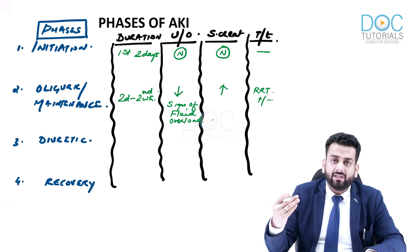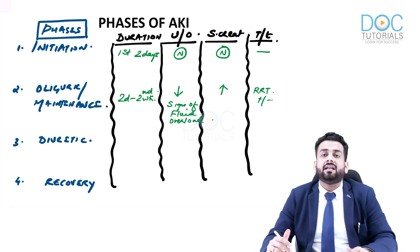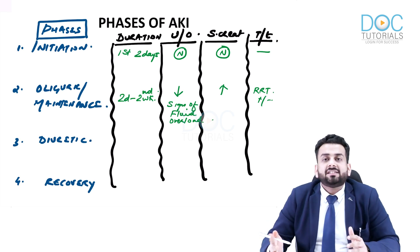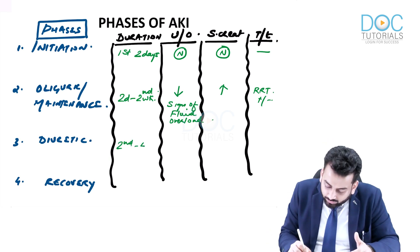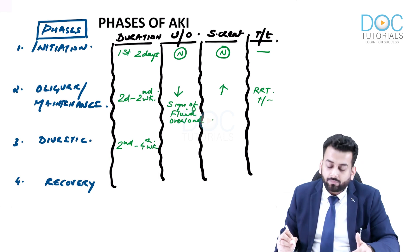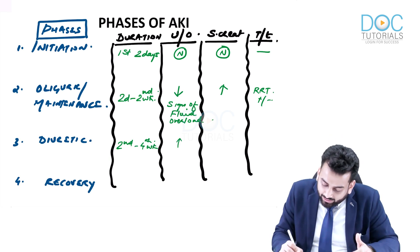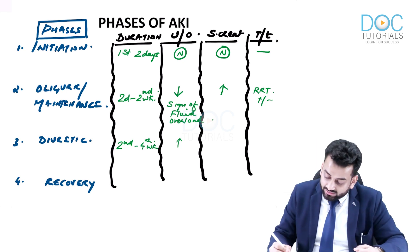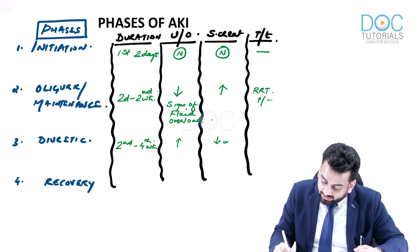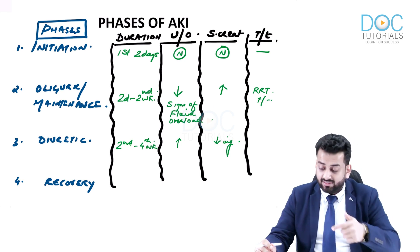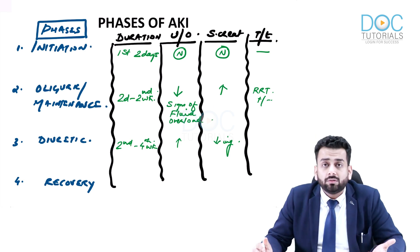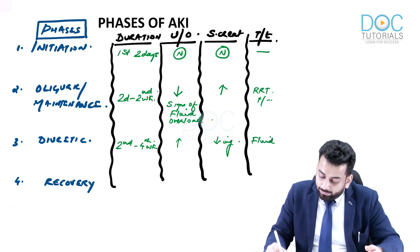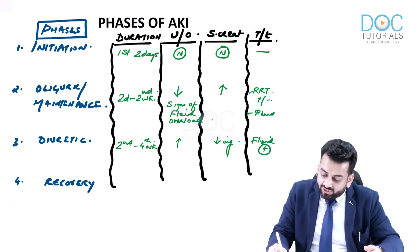The diuretic phase follows, lasting from approximately the second to the fourth week. The kidney starts to recover its function; urine output increases and serum creatinine begins to decrease. During this phase, you may need to be liberal with fluids — potentially giving the patient more fluid — in contrast to the fluid restriction required during the oliguric phase.